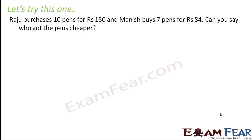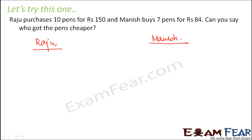Let us try another problem. Raju purchases 10 pens for rupees 150. Manish purchases seven pens for rupees 84. Can you say who got the pens cheaper? We can't simply compare rupees 150 and rupees 84, because Raju got 10 pens for 150 while Manish got only seven pens for 84. In order to compare the two, we need to find out the cost of one pen — how much did Raju pay and how much did Manish pay for one pen.